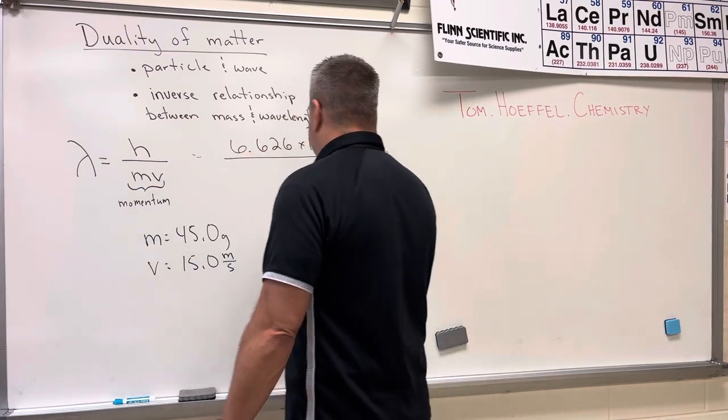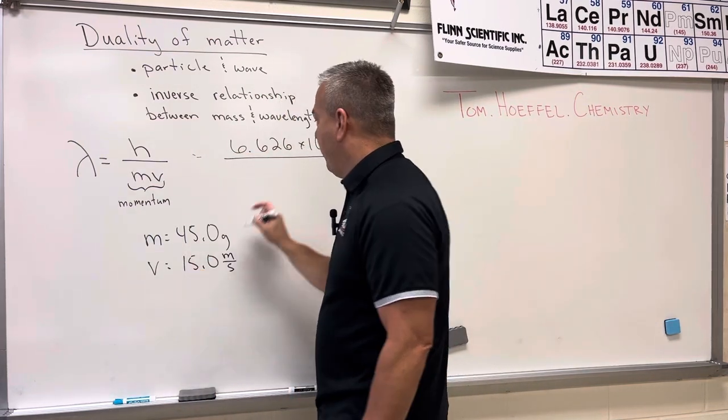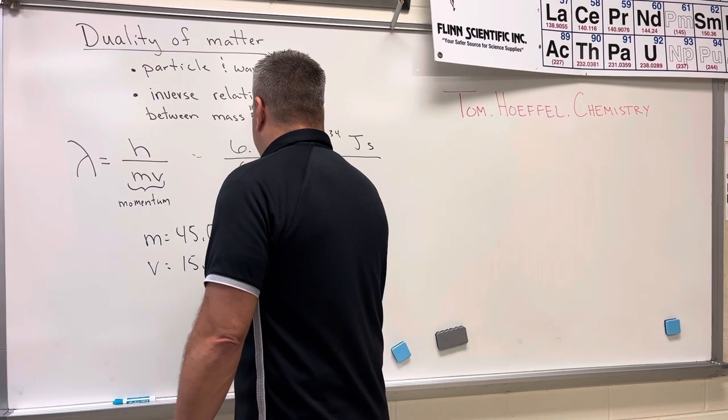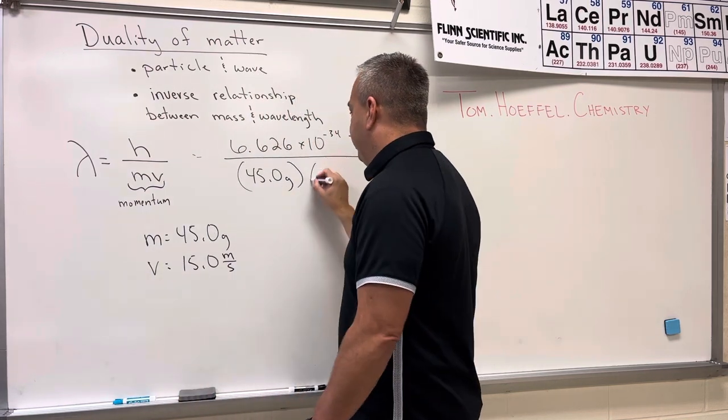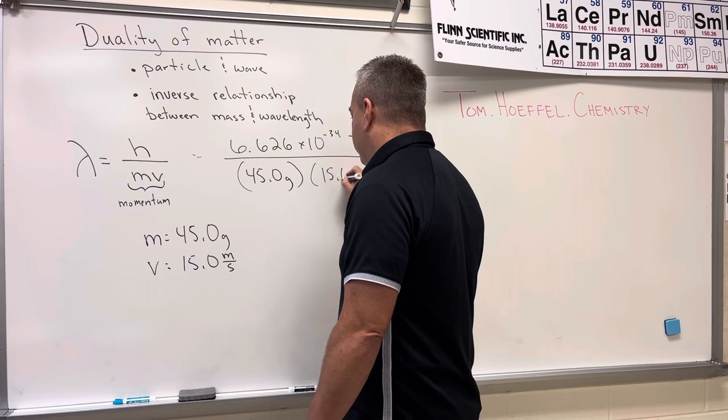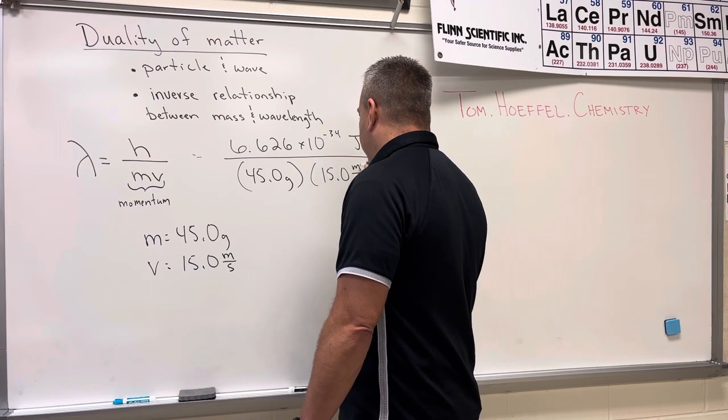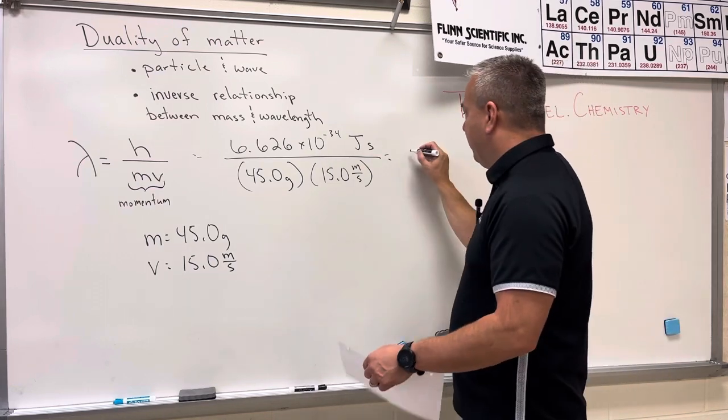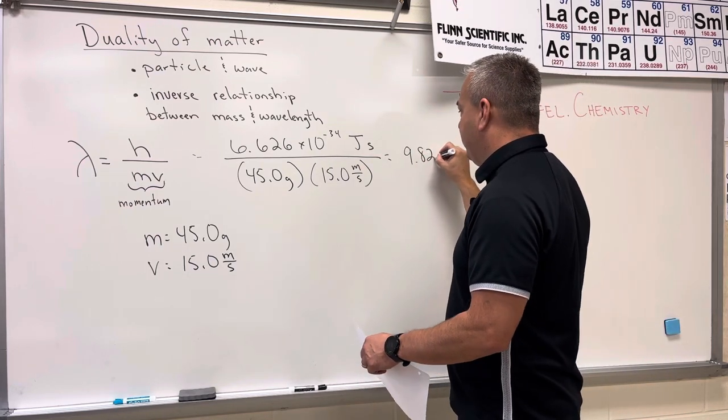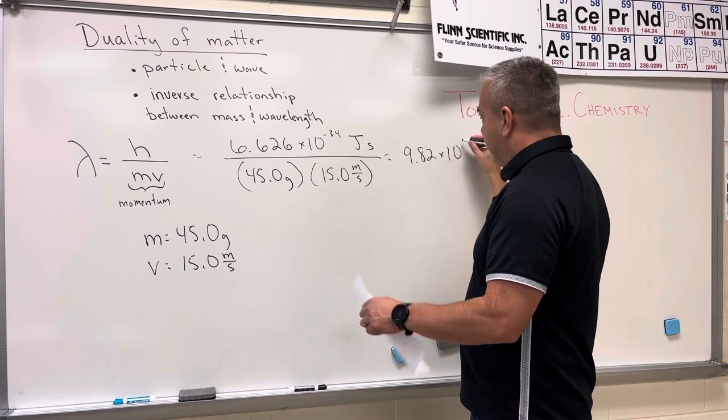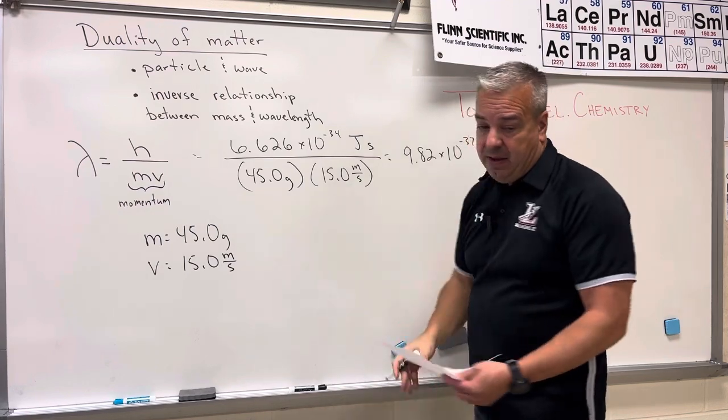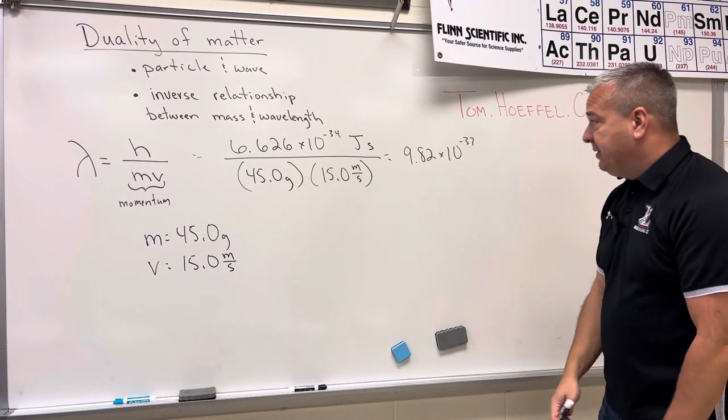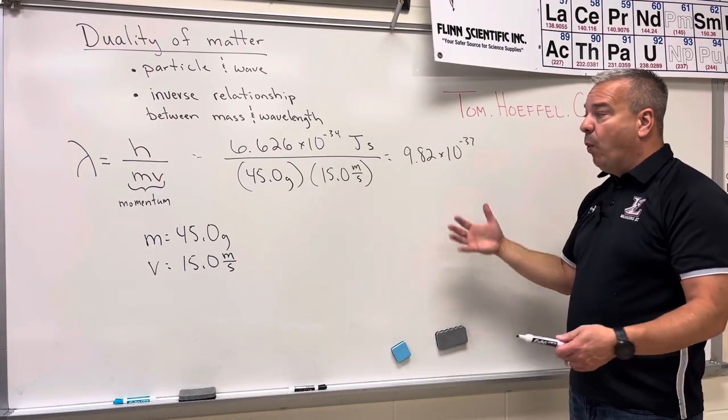If we took our mass, which is 45 grams, and our velocity, which is 15 meters per second, and we worked this out, we're going to get this number of 9.82 times 10 to the negative 37. But here's the problem. 9.82 times 10 to the negative 37 what?